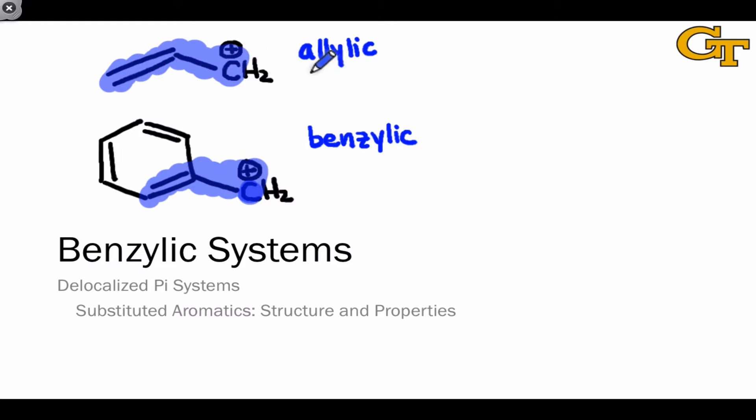Whereas the allylic pi system has only one alternative important resonance form, because of the extreme electron delocalization within the benzene ring, the benzylic pi system has three alternative resonance forms.